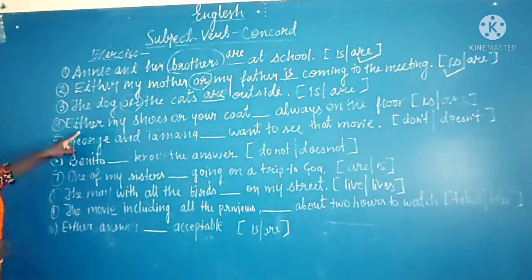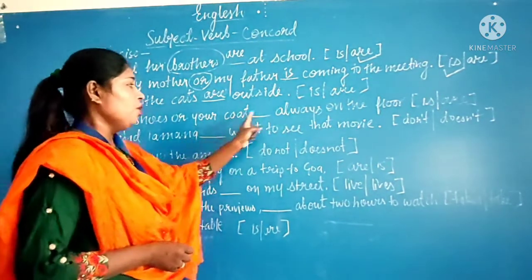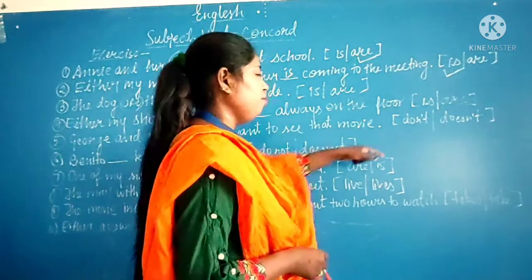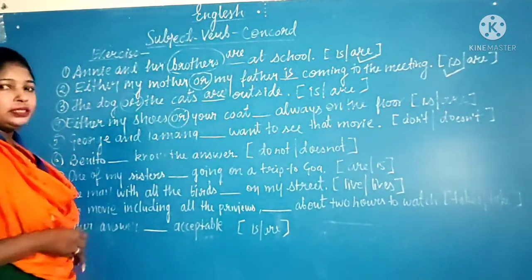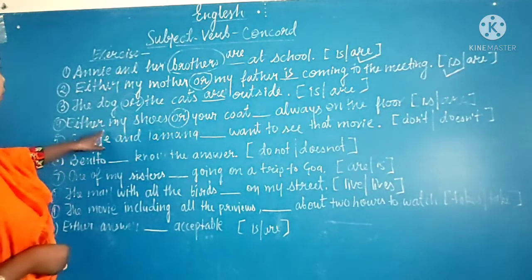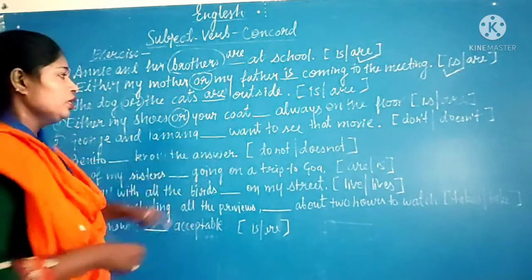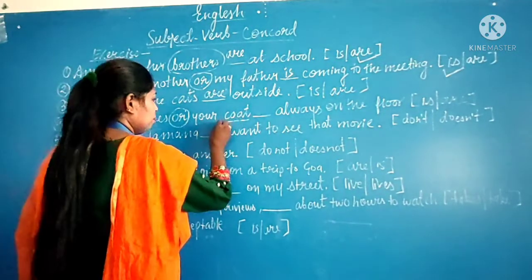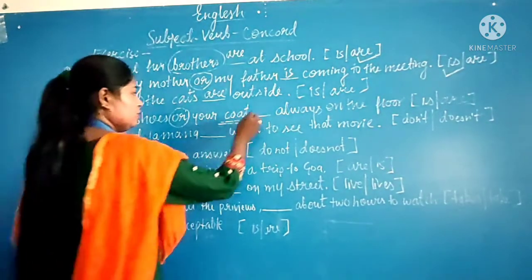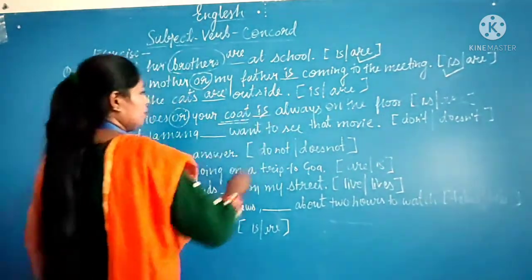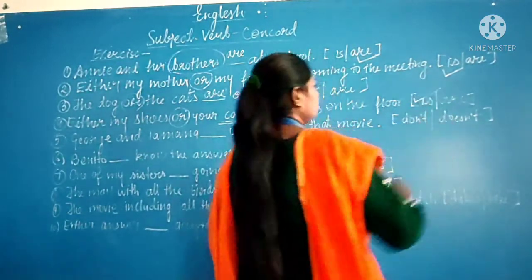Next: 'Either my shoes or your coat ___ always on the floor.' Again 'either/or' is used, meaning there is a choice between two. The second noun — the nearest noun — is 'coat,' which is singular. So we use 'is.' Either my shoes or your coat is always on the floor.